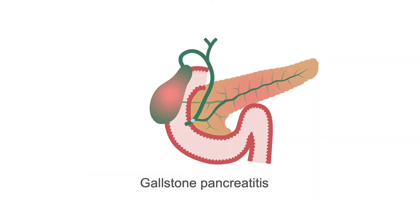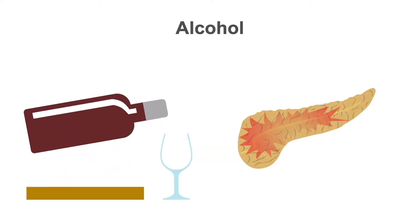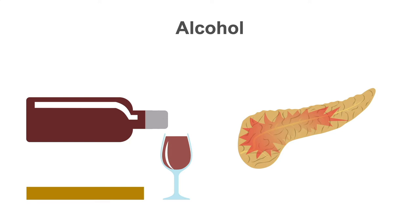When gallstones are the cause of pancreatitis, it is called gallstone pancreatitis. It is caused by either reflux of bile into the pancreatic duct, obstruction of the pancreatic duct or ampulla, or edema resulting from the passage of a stone. Alcohol is responsible for approximately 25-35% of cases of acute pancreatitis in the United States. It is thought to act by increasing the synthesis and release of pancreatic digestive and lysosomal enzymes, which eventually damage the pancreatic tissue and leak out.